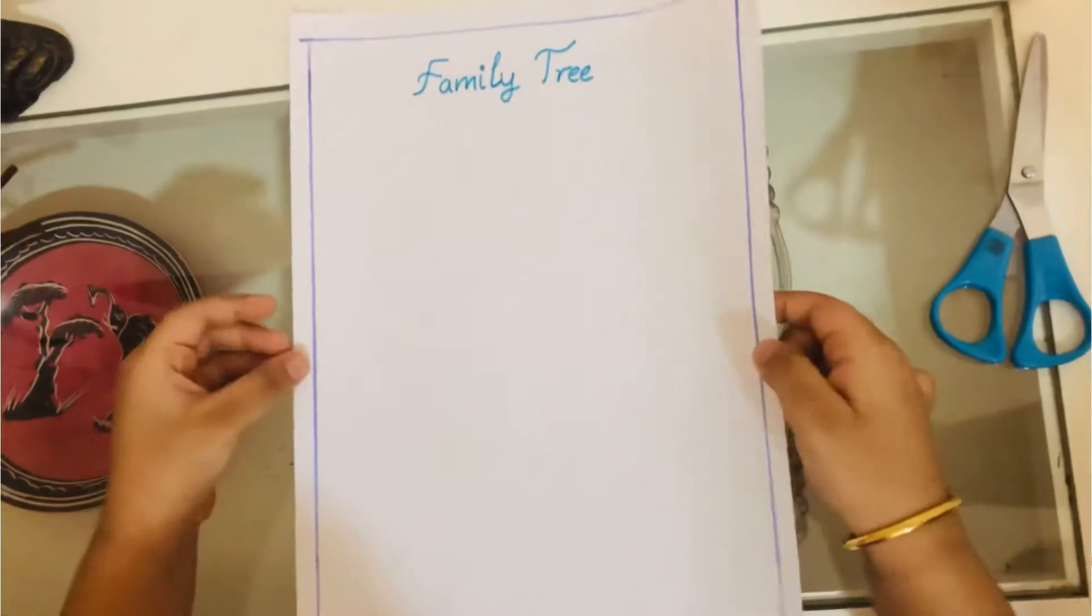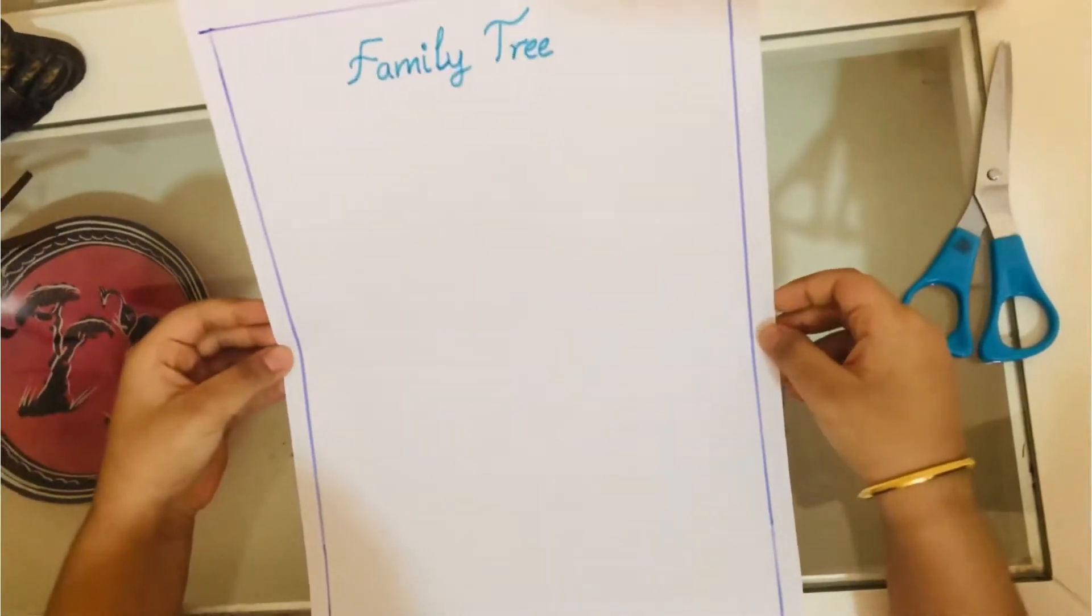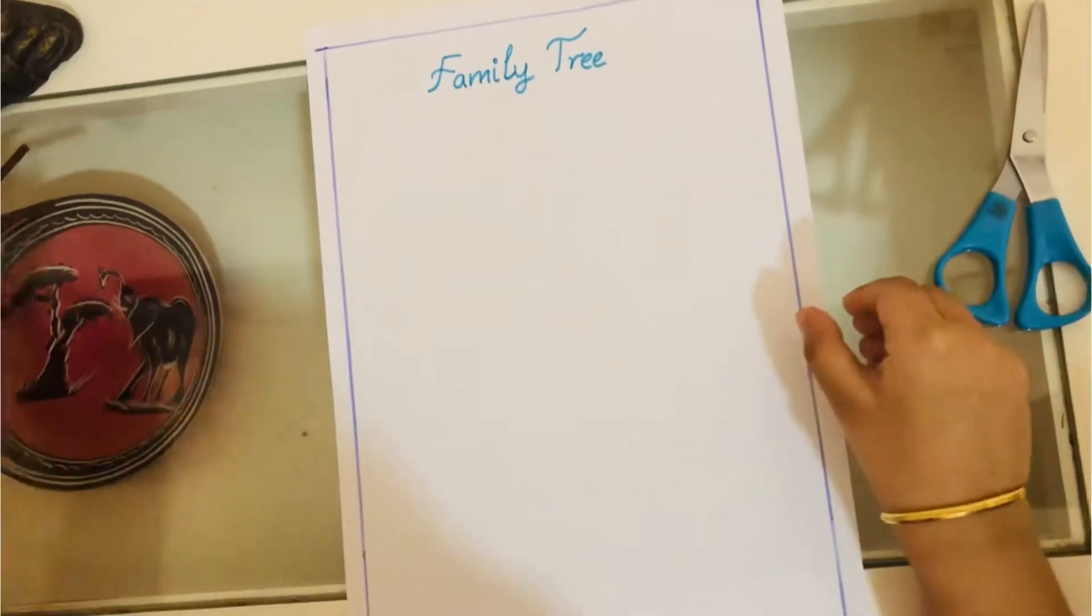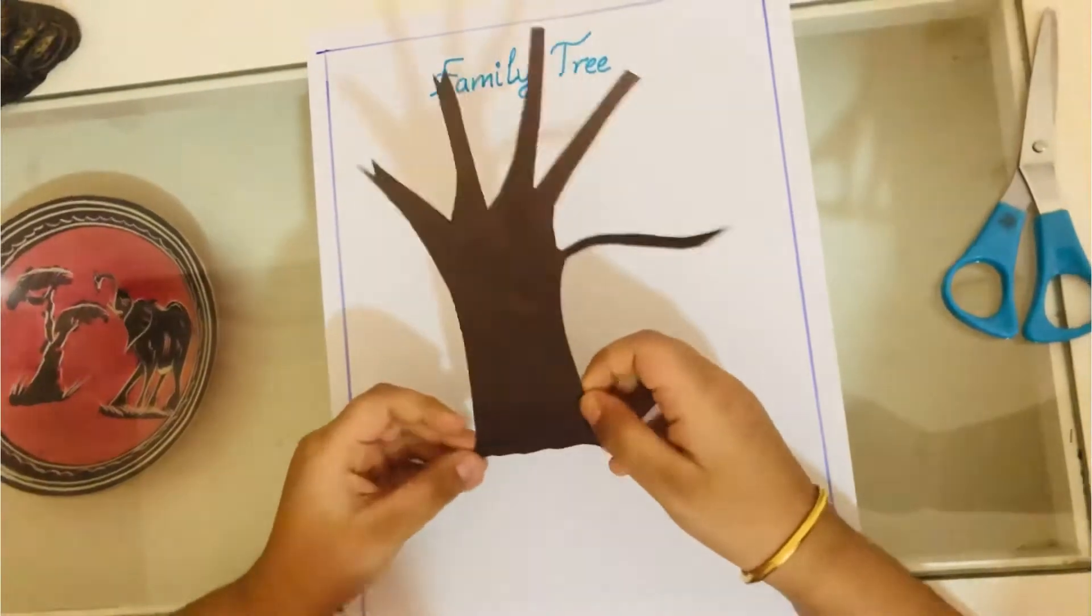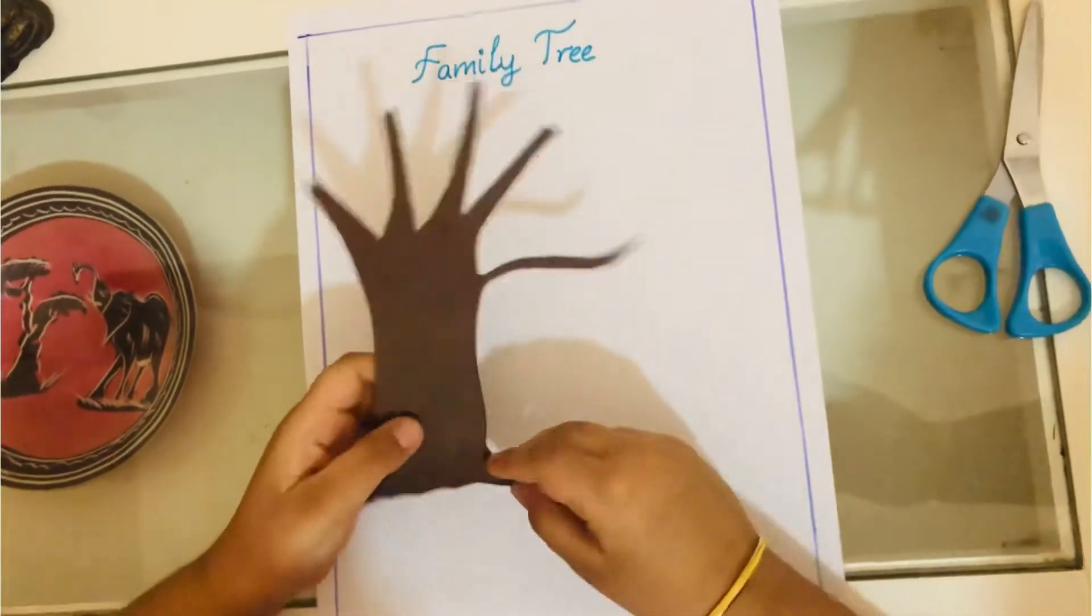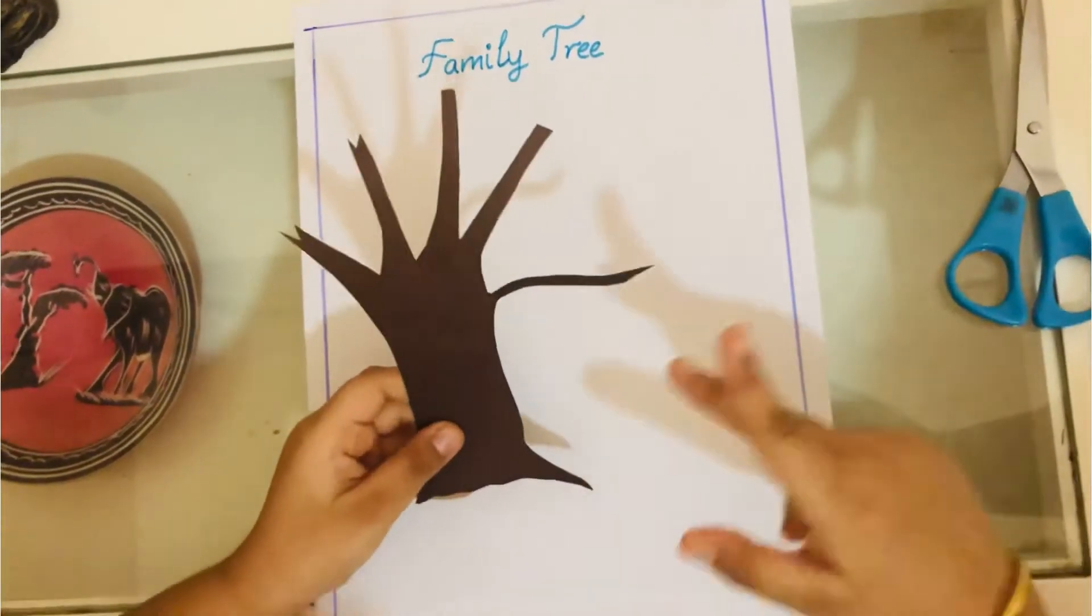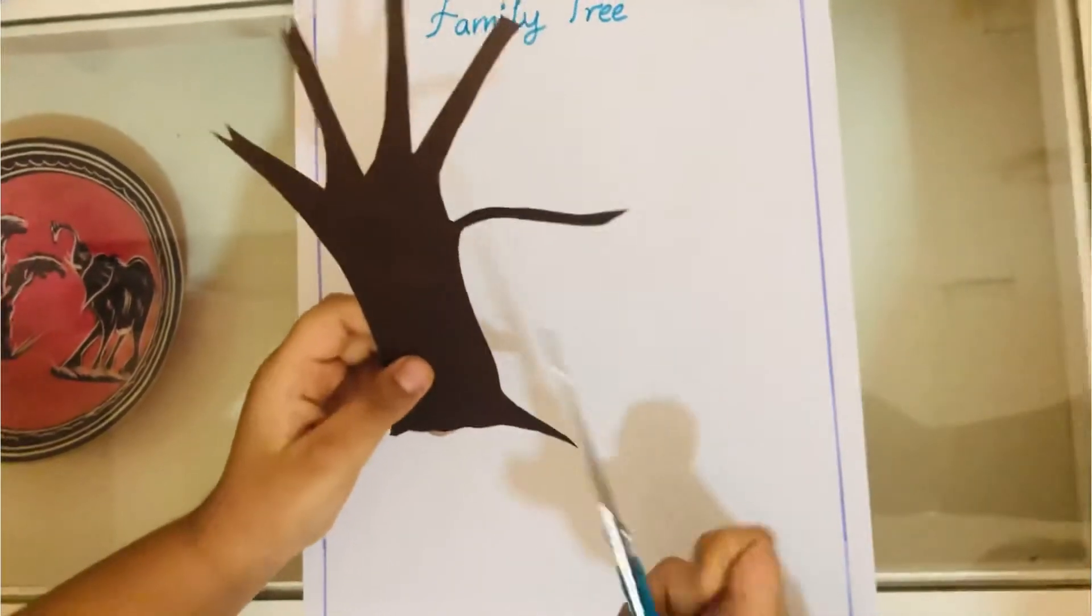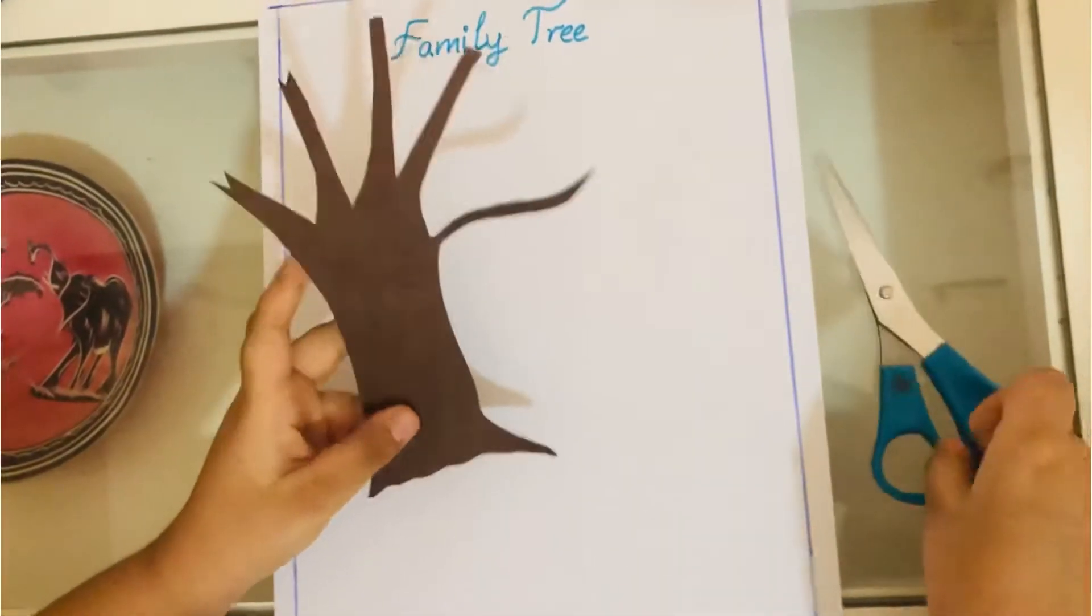First, I am taking white paper and brown craft paper. I am making a tree for the family tree using these materials.